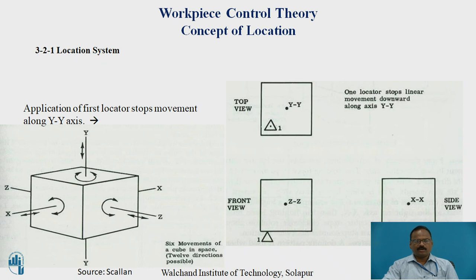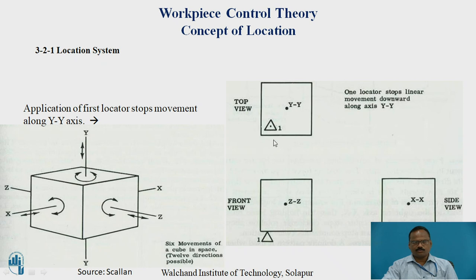In order to constrain these 12 degrees of freedom, we make use of locators and clamps. The 3-2-1 principle suggests taking three mutually perpendicular planes to constrain degrees of freedom. One locator is placed at the bottom plane — shown here in the front view and top view. This locator stops the linear movement downward along the Y-Y axis, since the locator is kept at the bottom of the workpiece.